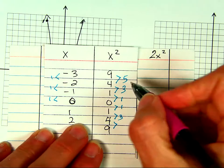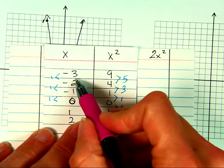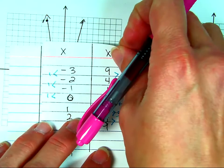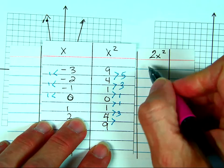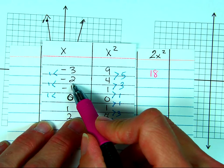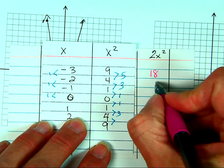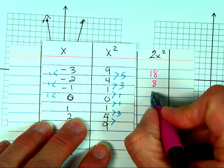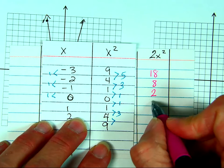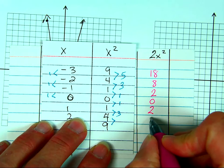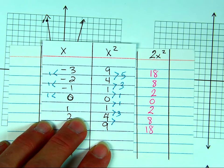For 2x squared: I take 3, square it to get 9, then multiply by 2 — that's 18. Then negative 2 squared is 4, doubled is 8. Then 1 squared is 1, doubled is 2. And 0 squared times 2 is 0. Because it's symmetric I can see both sides. What's the pattern here? The distances are 2, 6, and 10.